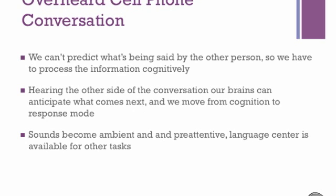But Multiple Resource Theory isn't just for celebrity chefs and human-computer interaction researchers. We can use it to understand things we encounter in our own environment every day. Here are two examples. An overheard cell phone call is annoying because we can't predict what's being said by the other person, so we have to process that information cognitively. When we hear the other side of the conversation, our brains can anticipate what comes next, and we move from the cognition stage to response mode stage. In this stage, sounds become ambient and pre-attentive, so the language center is available for other tasks.